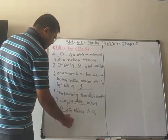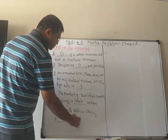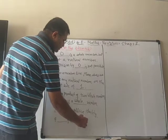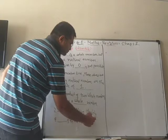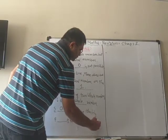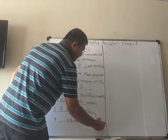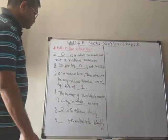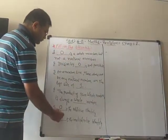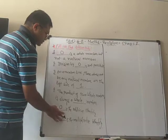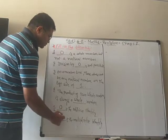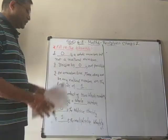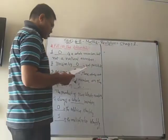Blank is the multiplicative identity. We know that when we multiply any number with one, the answer is the same. So one is the multiplicative identity.